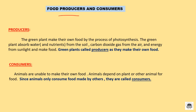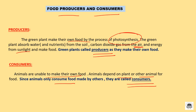Now, producers and consumers. Green plants make their own food by the process of photosynthesis. They absorb water from the soil and carbon dioxide gas from the air, and get energy from sunlight to make their own food. That's why plants are called producers. Animals are unable to make their own food — they always depend on plants or other animals. They consume food, so they are called consumers.